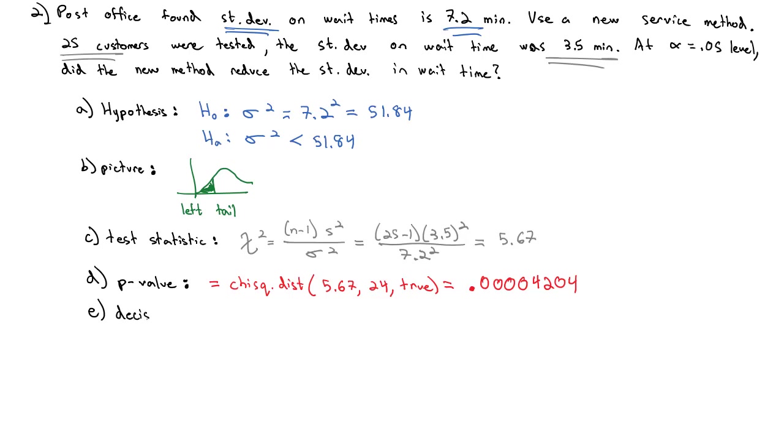This very small p-value leads to the decision. The p-value of 0.00004204 is much smaller than α = 0.05. A small p-value means we reject the null hypothesis. We have successfully achieved the alternative hypothesis.